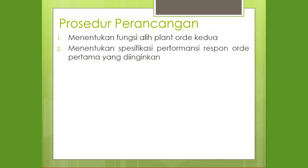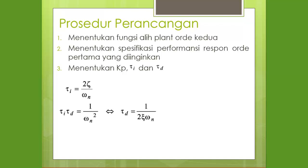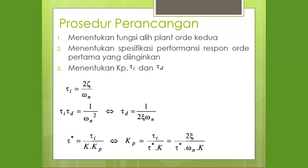Prosedur perancangan PID untuk plan order kedua tanpa delay: pertama, menentukan fungsi alih plan order kedua. Kedua, menentukan spesifikasi performansi respon order pertama yang diinginkan. Ketiga, menentukan parameter: TOI = 2ζ/ωn, TOD = 1/(2ζ·ωn), dan KP = TOI / (TO* × K), atau dapat disederhanakan menjadi 2ζ / (TO*·ωn·K).